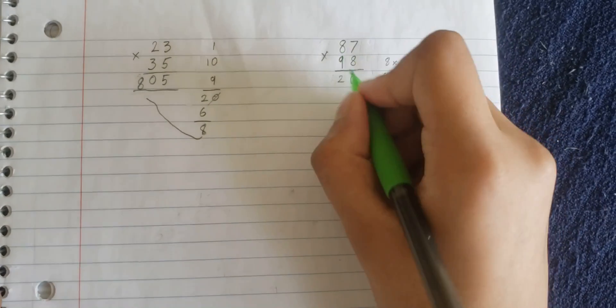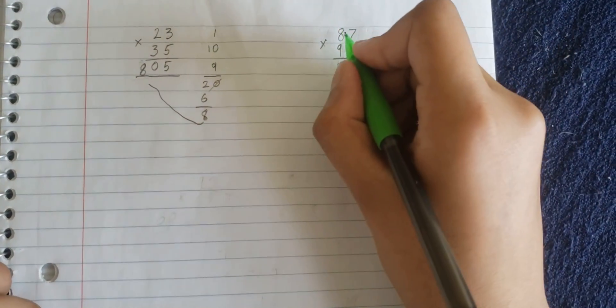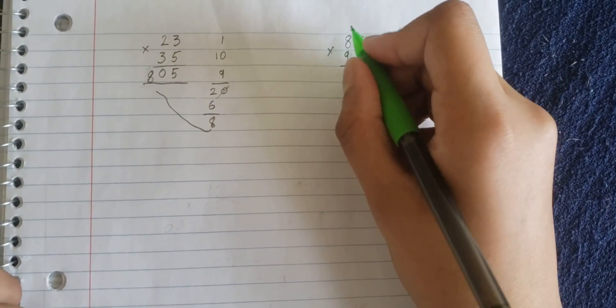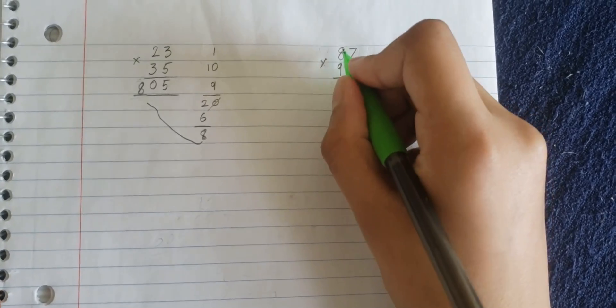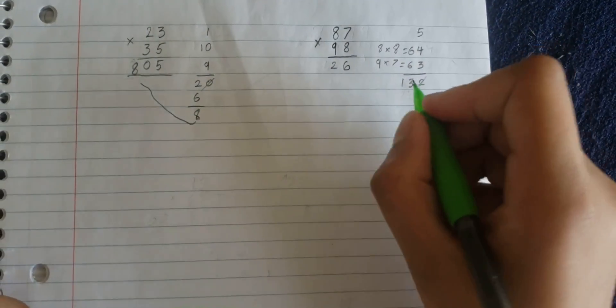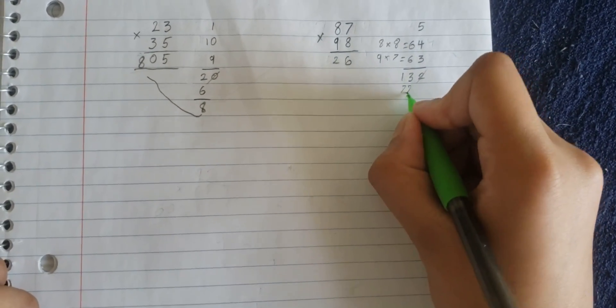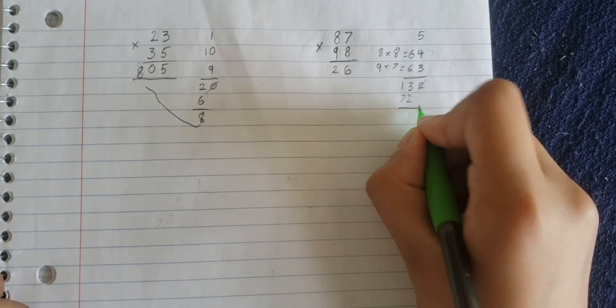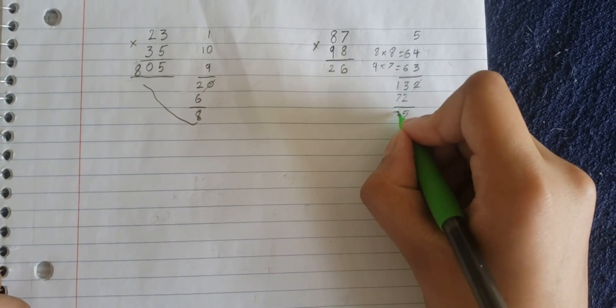Now, because you cross multiply, now it's the next step. You multiply the tens place. 8 times 9 is 72, so 7, 2. Now, you add this, 5 and 8, 85.